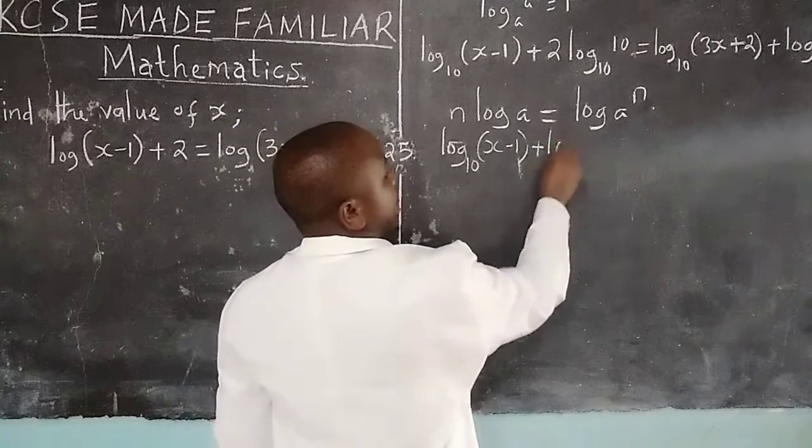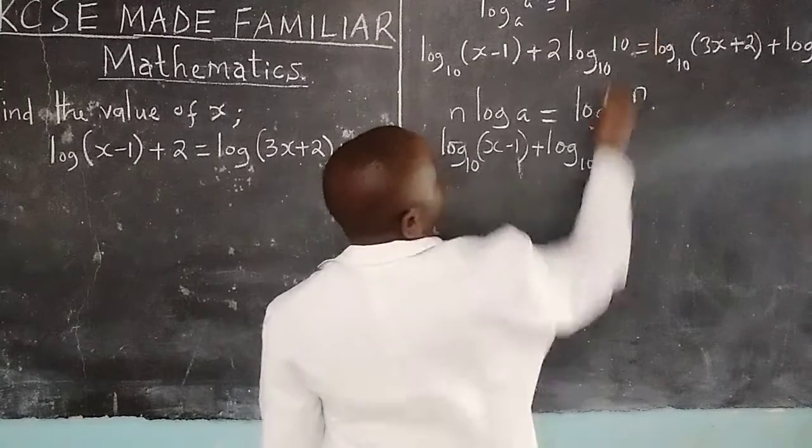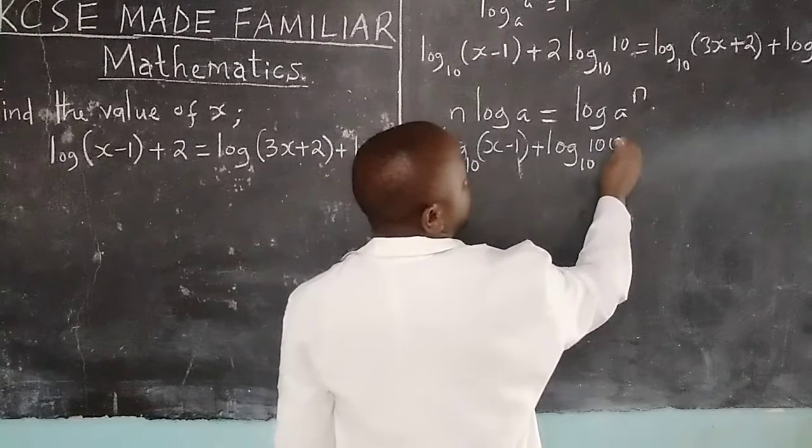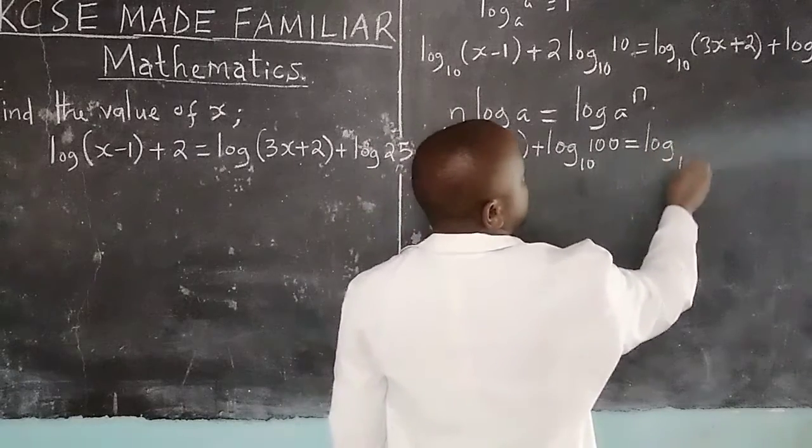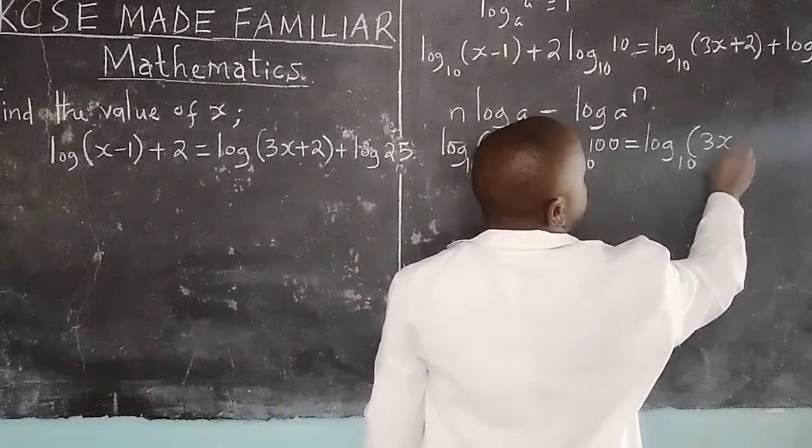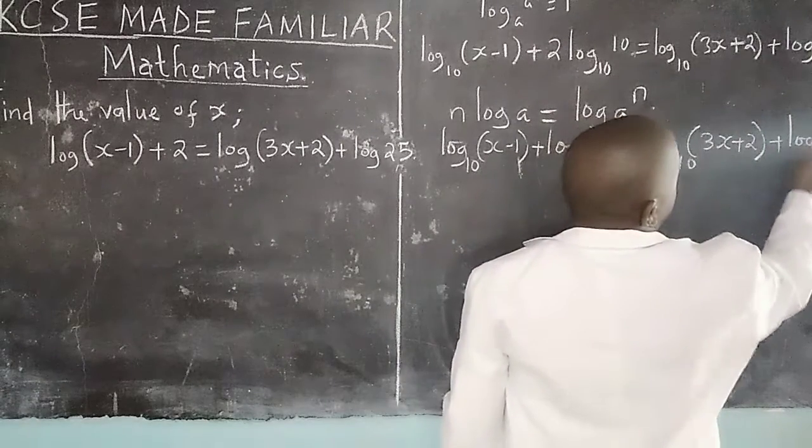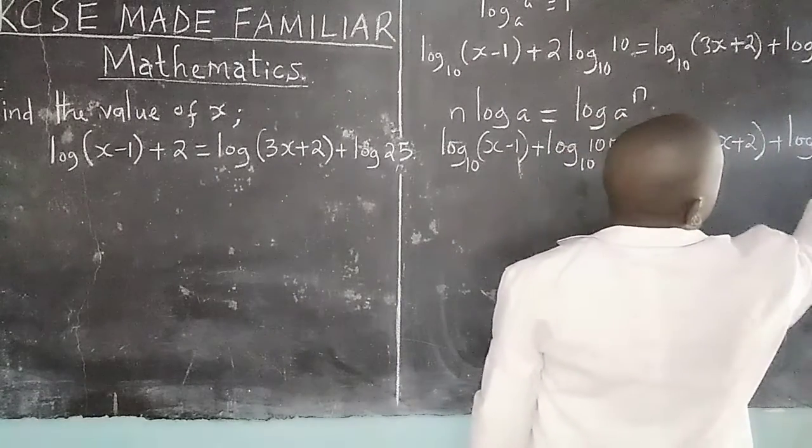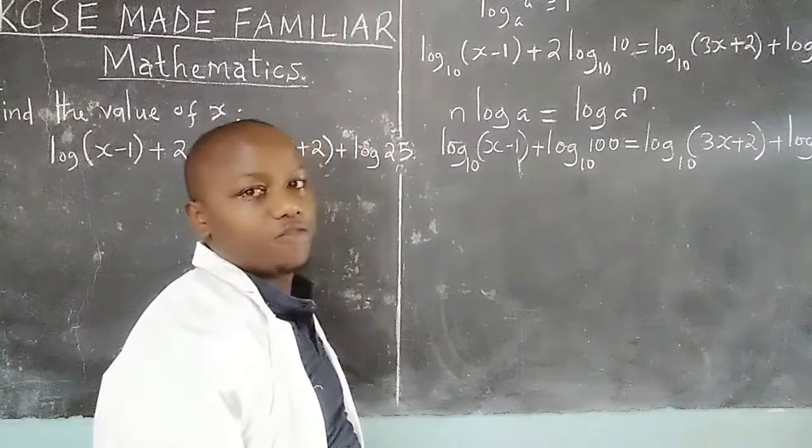then plus log₁₀(10²). So that becomes log₁₀(3x+2), plus log₁₀(25).